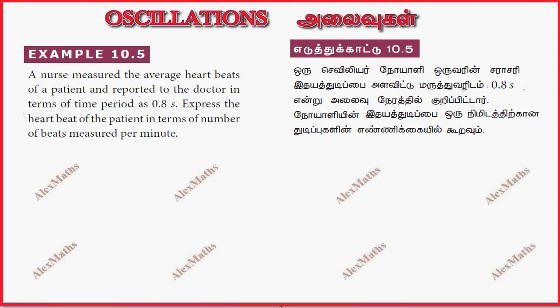Hi students, this is Alex here. Example 10.5: A nurse measured the average heartbeat of a patient and reported to the doctor in terms of the time period as 0.8 seconds. So the time period is going to be 0.8 seconds.